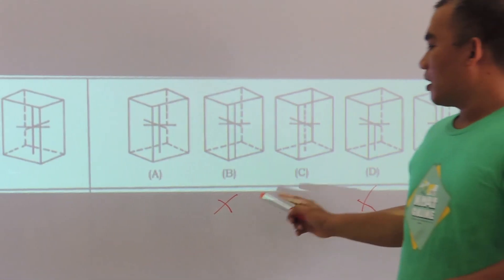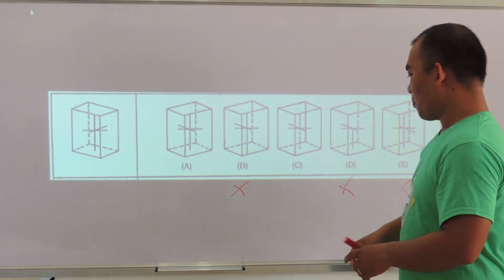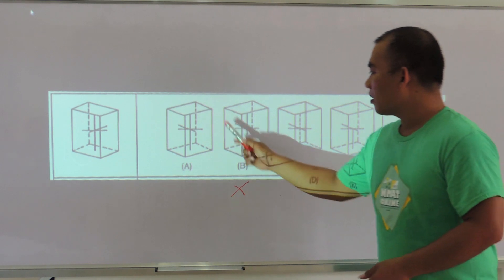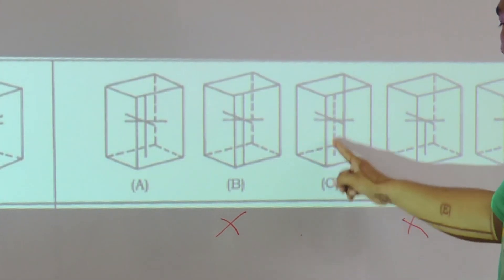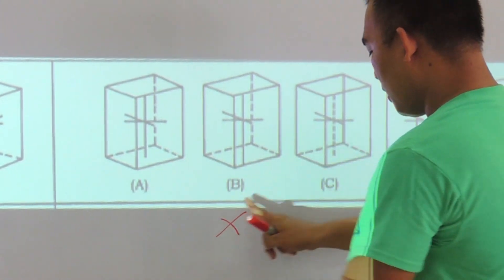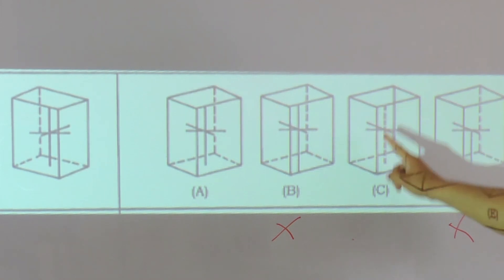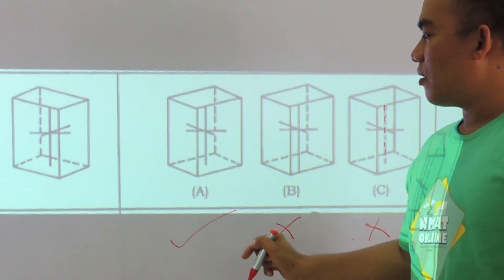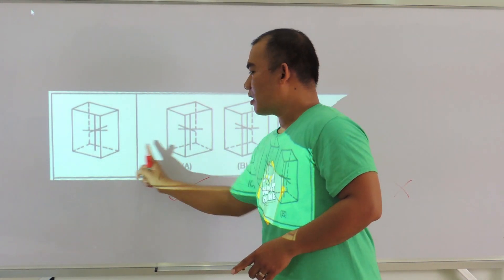I can actually determine the correct mirror image of that figure without looking at the original figure, by reviewing the three previously eliminated options. Comparing one part of the figure, this appears to be a straight line, while option C consists of a broken line. So I could eliminate option C, and the answer is option A. We verify it against the original figure — this is indeed the correct mirror image.